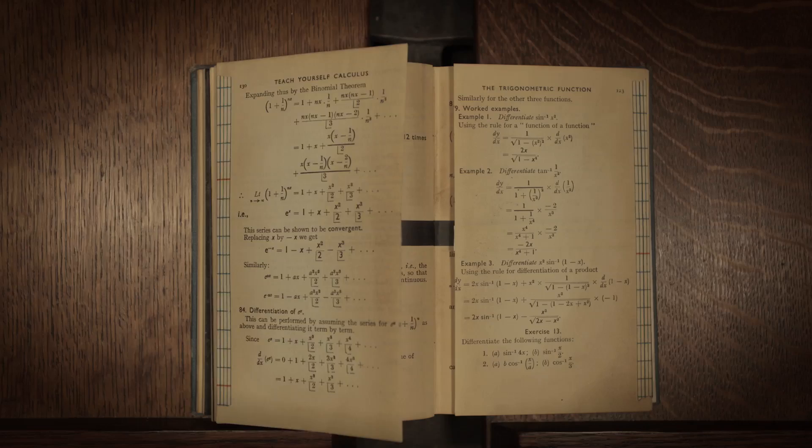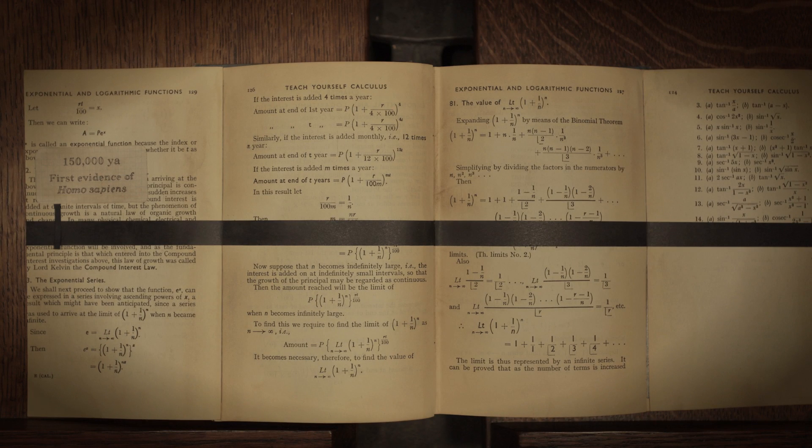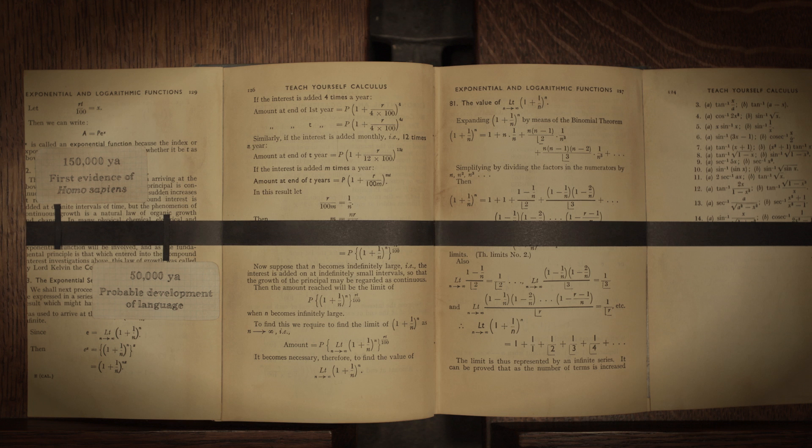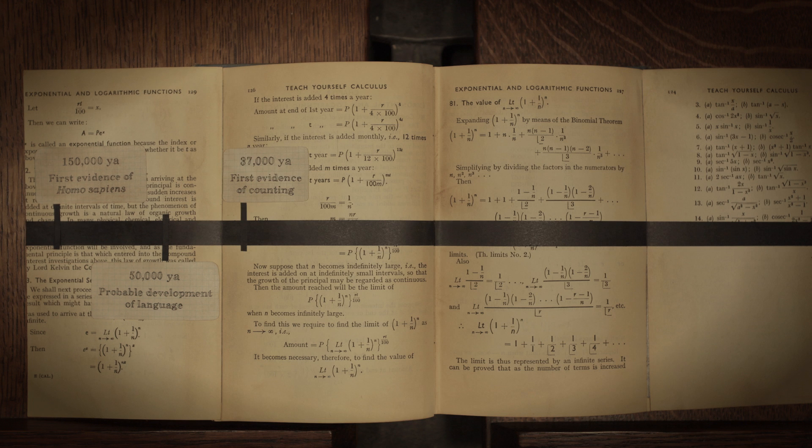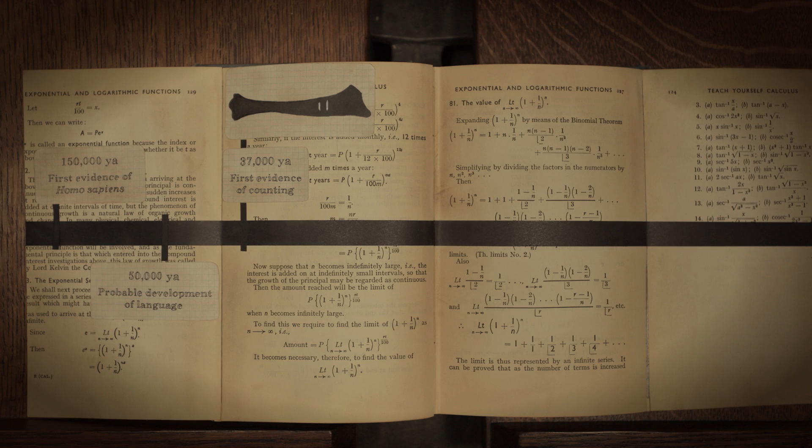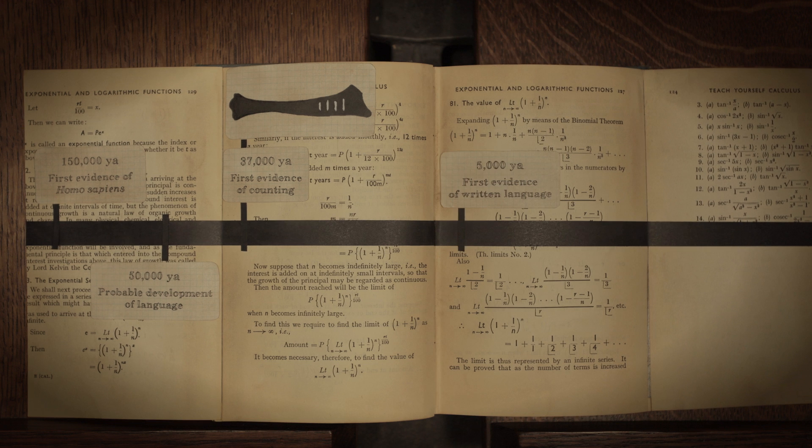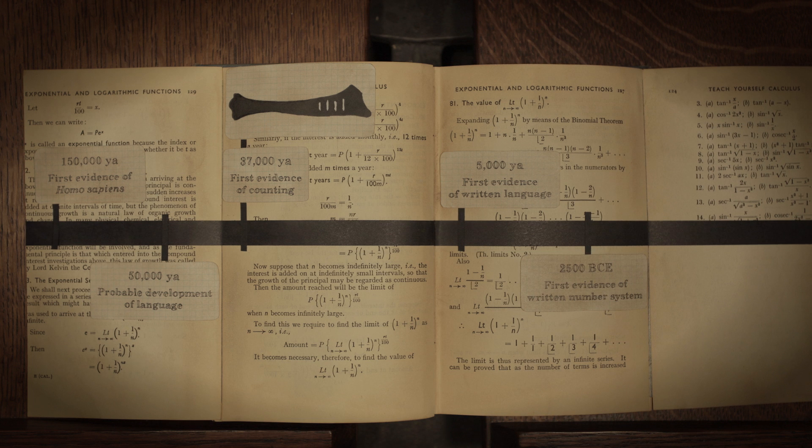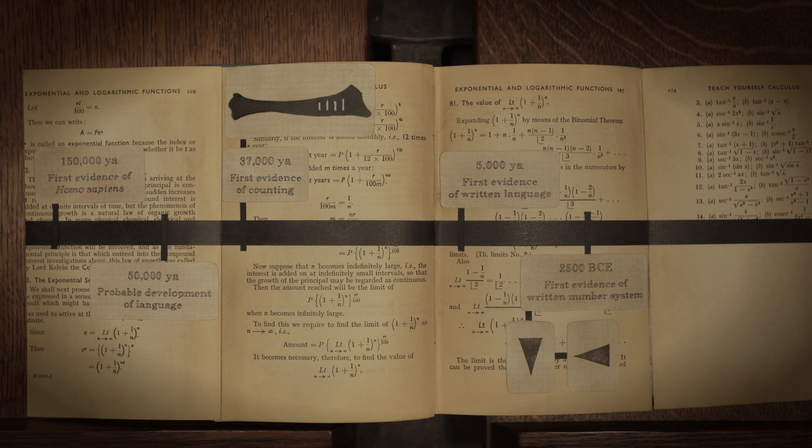The earliest known archaeological evidence of counting dates back approximately 37,000 years and is merely a series of notches in bone. It wasn't until around 2500 BC that the first written number system began to take form in Mesopotamia, using the units 1, 10, and 60.